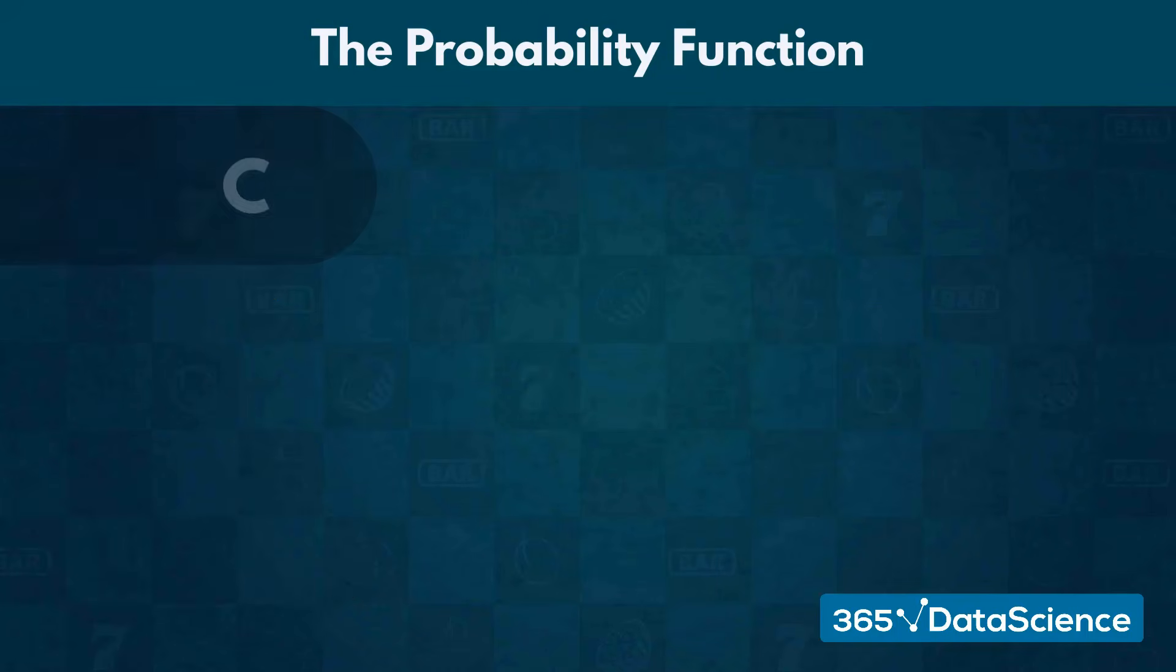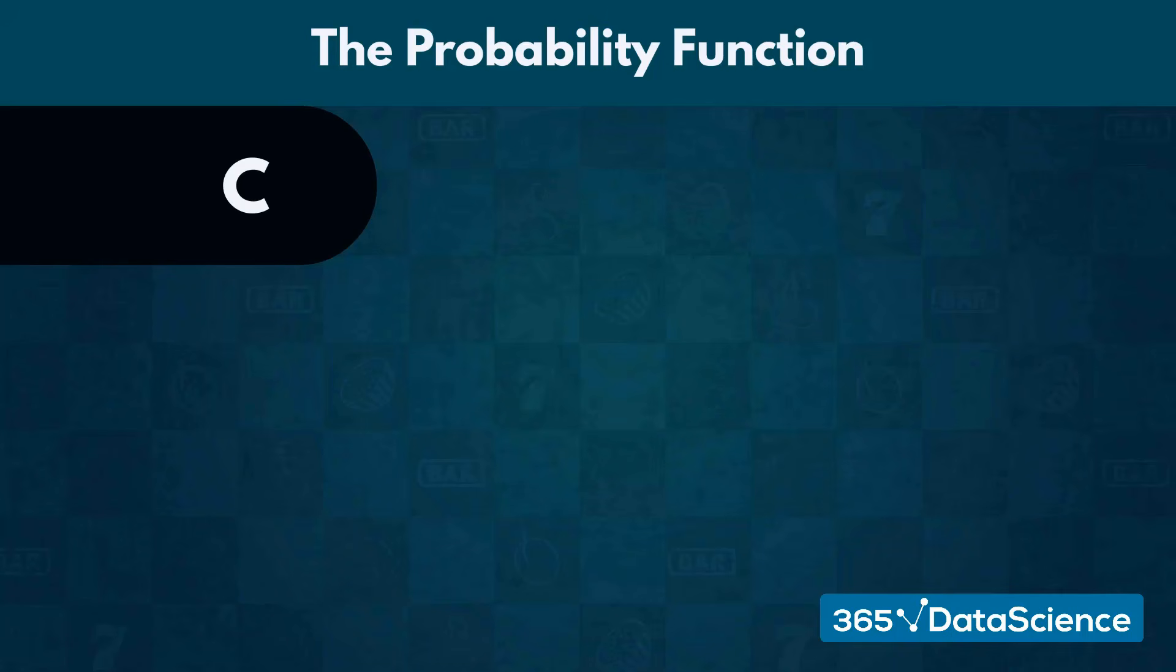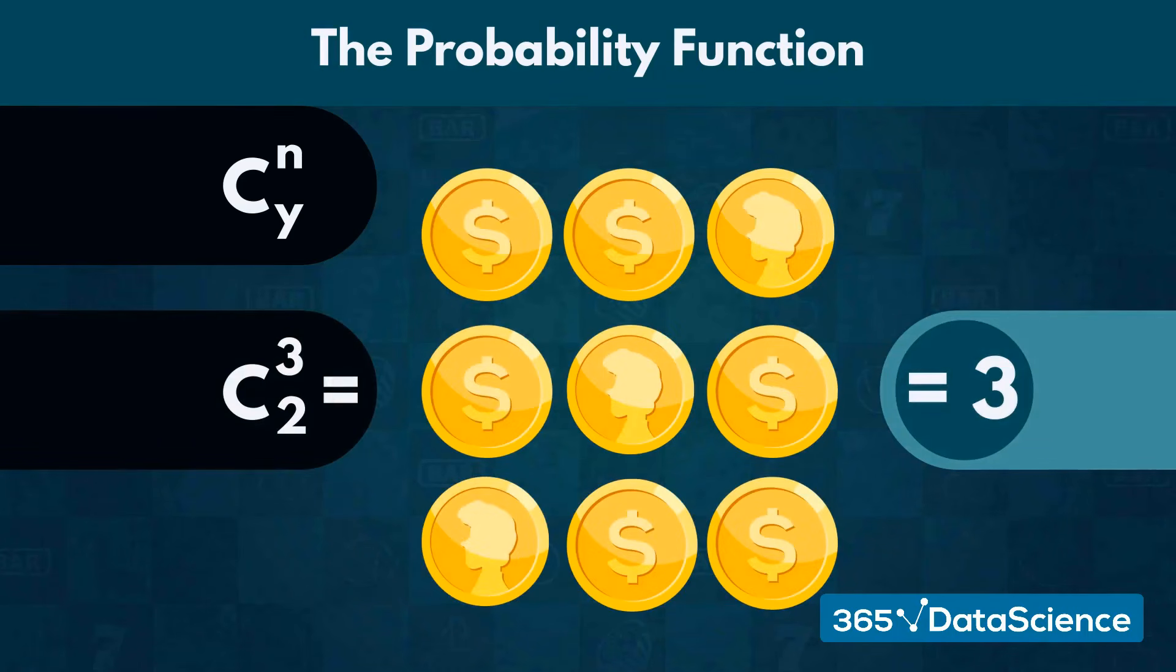Thus, we need to find the number of combinations in which Y out of the N outcomes would be favorable. For instance, there are 3 different ways to get tails exactly twice in 3 coin flips.